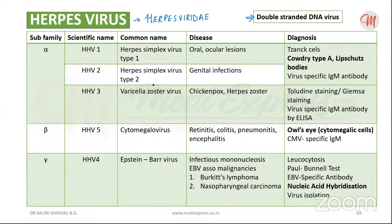For diagnosis of varicella-zoster virus, direct microscopy can be done using Tzanck staining or Giemsa staining. Virus-specific IgM antibody can be detected by ELISA. Virus isolation can also be done in human fibroblast cells.